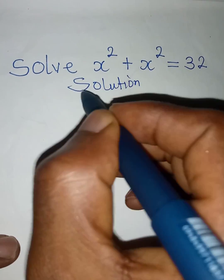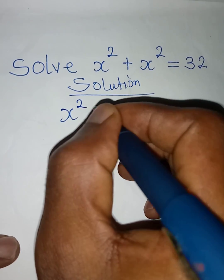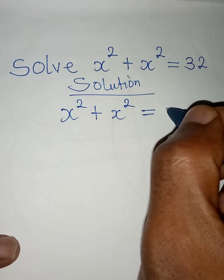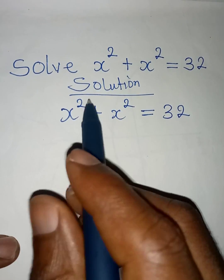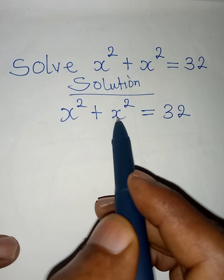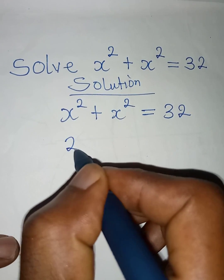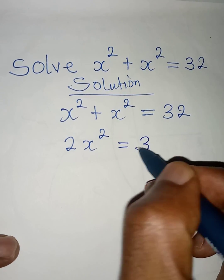We have x squared plus x squared equal to 32. And we can simply add x squared plus x squared to get 2x squared and this will be equal to 32.